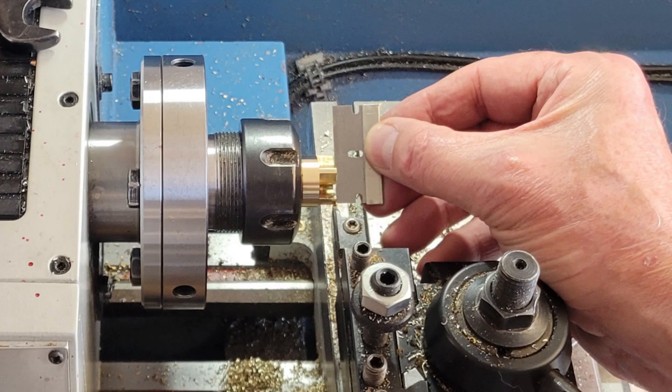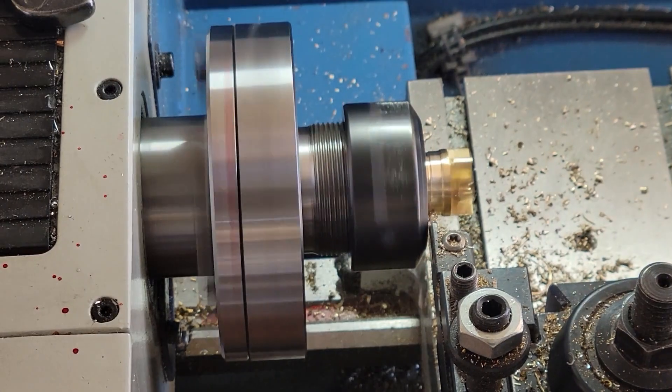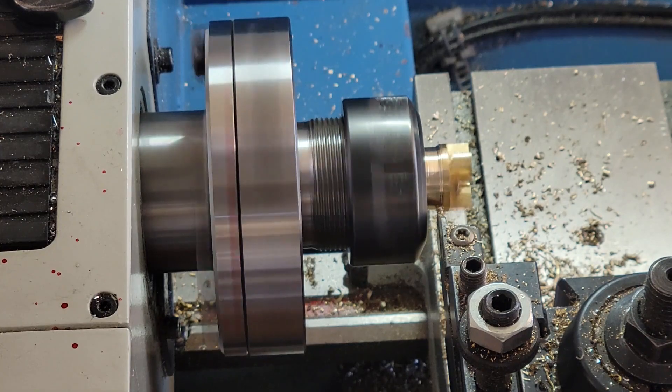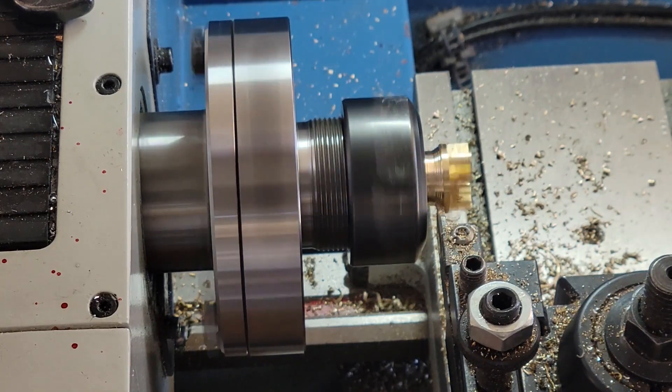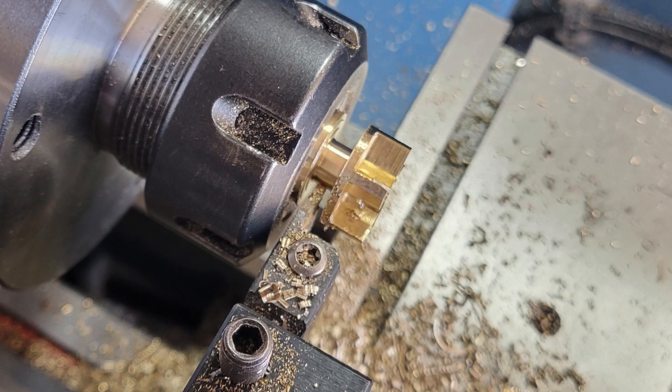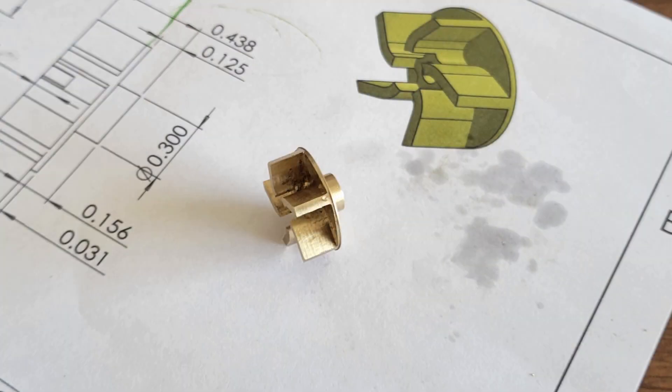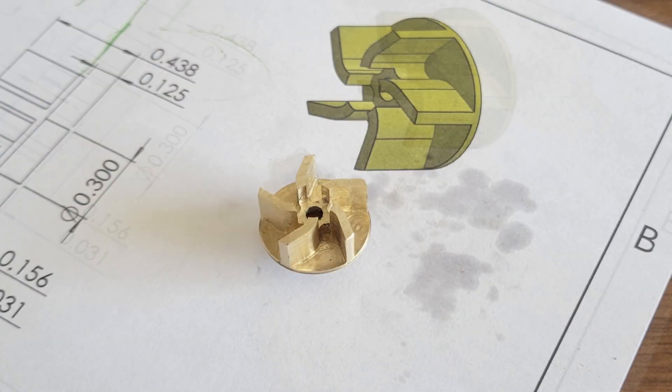We touch off our parting tool with a razor blade to set the zero point. Machine the small shoulder and then part the impeller off.